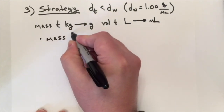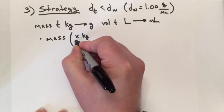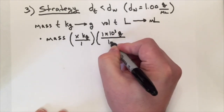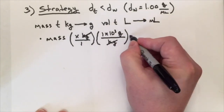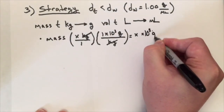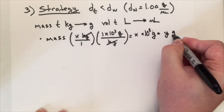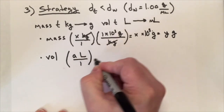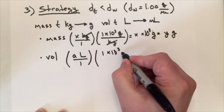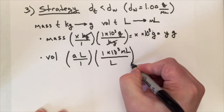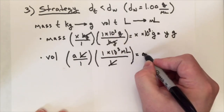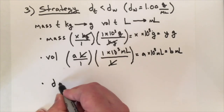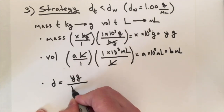We devise a conversion factor to go from x kilograms into grams: 1 times 10 to the 3 grams per kilogram. Kilograms cancel, giving us x times 10 to the 3 grams, equal to y grams. For volume, we do the same: a liters times 1 times 10 to the 3 milliliters per liter. Liters cancel, leaving a times 10 to the 3 milliliters, equal to b milliliters. The density of toluene equals y grams over b milliliters.